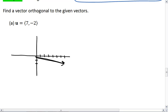There we go. So we see that this vector has a slope of negative 2 sevenths. Now think back to when we talked about linear equations. We know that whenever two lines are perpendicular to one another, they have the opposite reciprocal slopes.